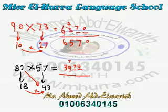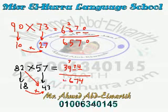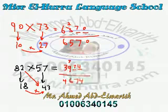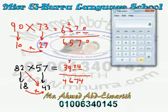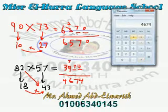The last digits: 4, 7, then 7 plus 9 equals 16, carry up 1, giving 4. So 82 times 57 equals 4,674.